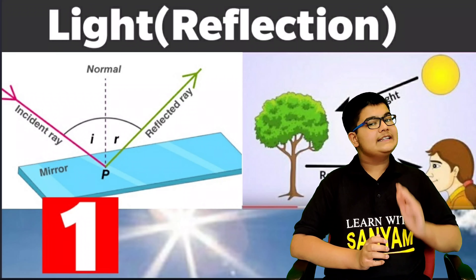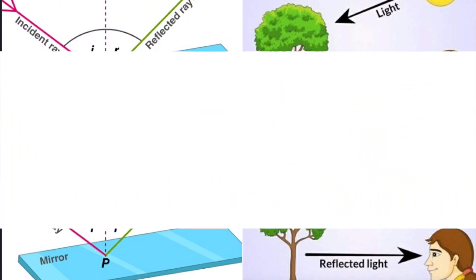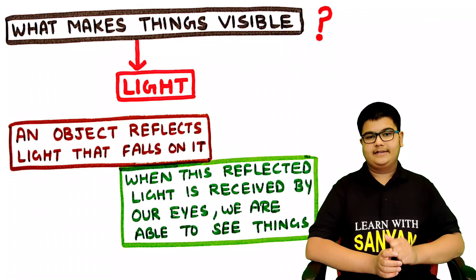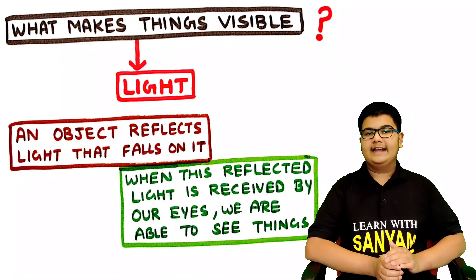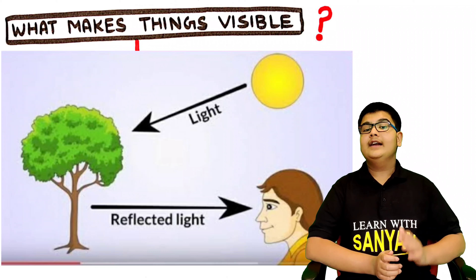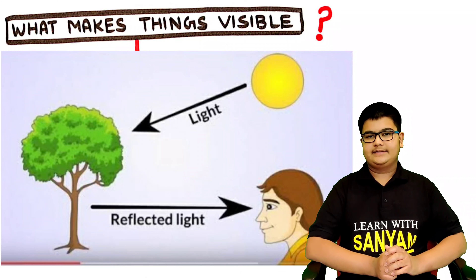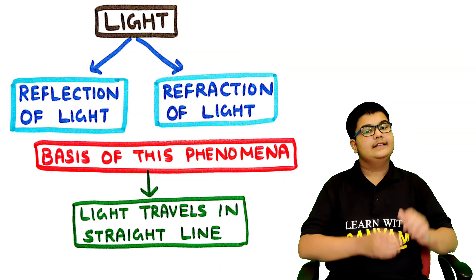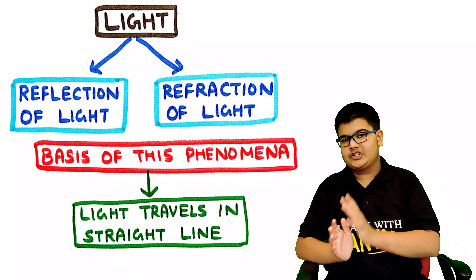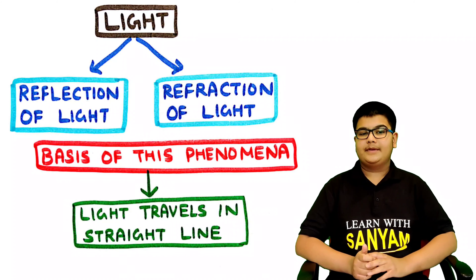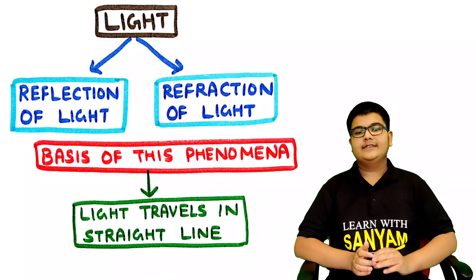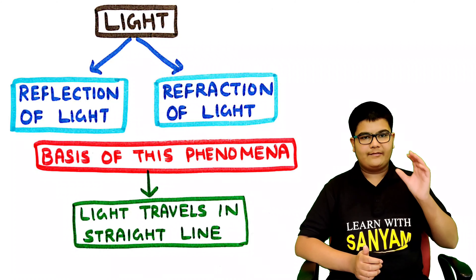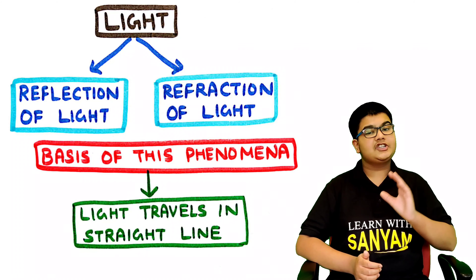Now how does this happen? Let's find out in this chapter. An object reflects the light that falls on it. When this reflected light is received by our eyes, we are able to see the different objects. So in this chapter, we shall study two phenomena of light: the reflection of light and refraction of light. The basis of both these phenomena is that light travels in a straight line — rectilinear propagation of light.